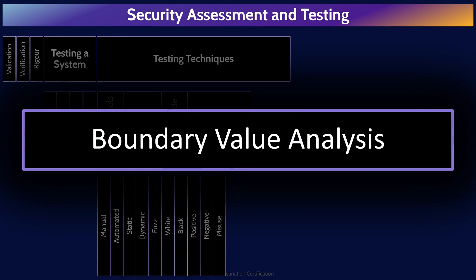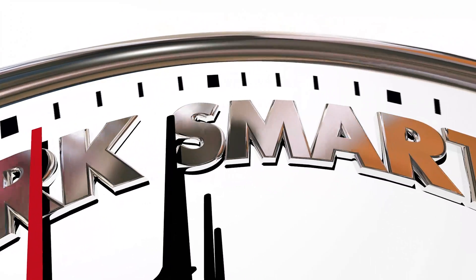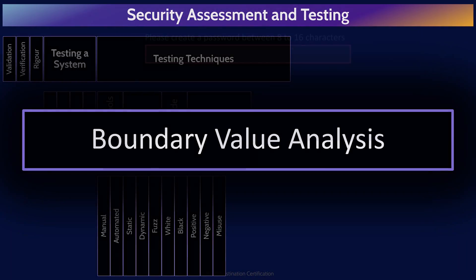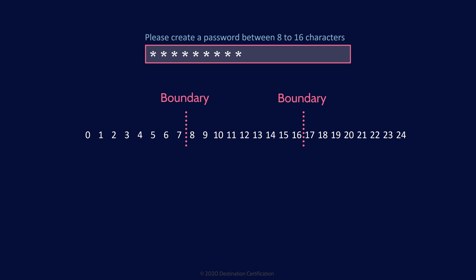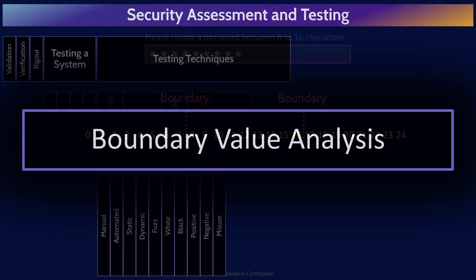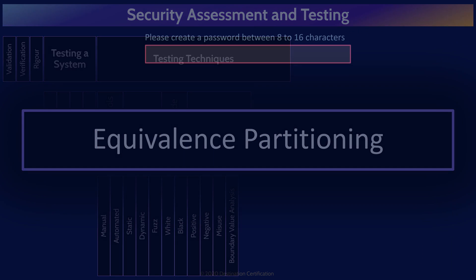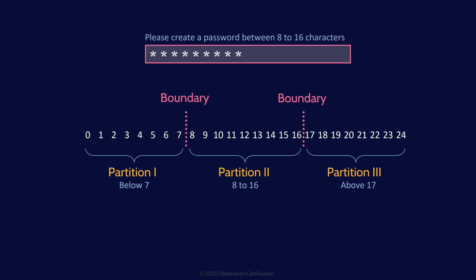The next two techniques are about making testing more efficient by reducing the number of tests required while still achieving a required level of confidence. In boundary value analysis, testing is focused at the boundaries — test cases cover the extreme ends of the input values. In equivalence partitioning, inputs are divided into groups which exhibit the same behavior, and test cases are written to cover each partition.